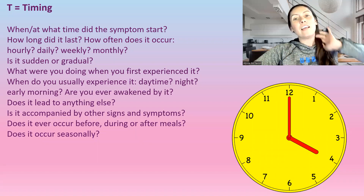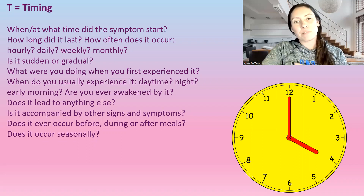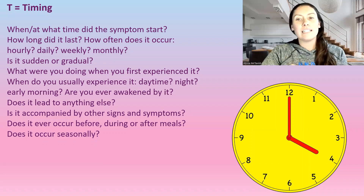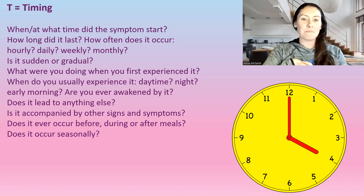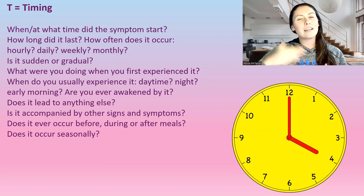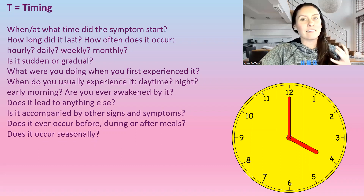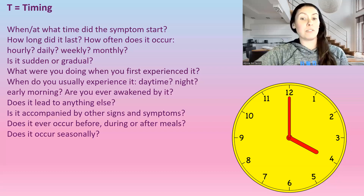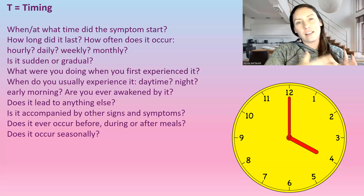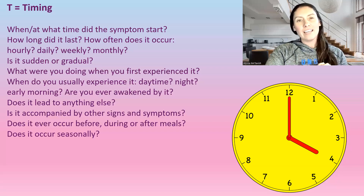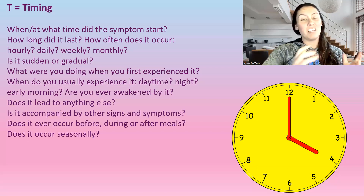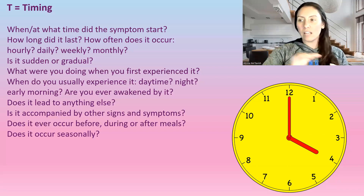T stands for timing. When or what time did the symptoms start? How long did it last? How often does it occur — daily, weekly, monthly? Does it happen suddenly or gradually? What were you doing when you first experienced it? Is it happening during the day, night, or early morning? Are you ever awakened by the symptom? Does it lead to any other problems? Is it accompanied by other signs or symptoms? Does it happen before or after a meal, or seasonally?